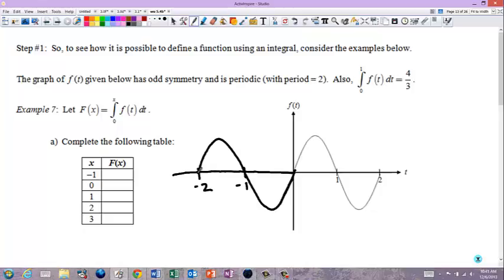That means from 0 to 1, that this area is 4 thirds. So, I know the area doesn't have a sign, but we're going to just go ahead and put signs on it. That means the integral from 1 to 2 would be negative 4 thirds. This would be negative 4 thirds, and this would be 4 thirds.